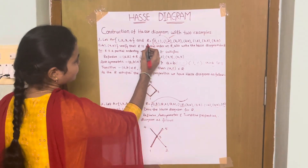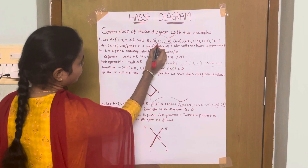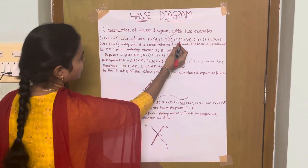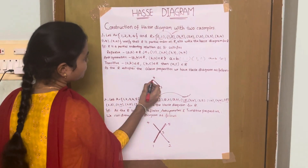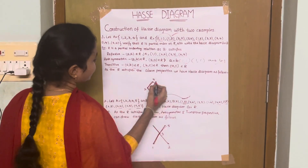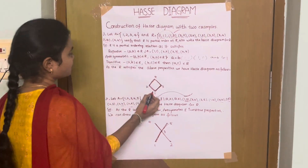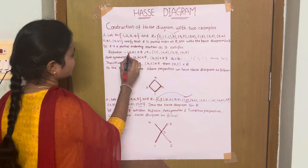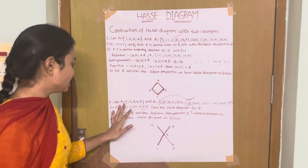Consider the Hasse Diagram from relation R. We have (1,1), (1,2) — so from 1 to 2. Then (2,2), (2,4) — so from 2 to 4. Also (1,3), so from 1 to 3. Then (3,3), (3,4) — from 3 to 4. And (1,4) is derived from the path 1 to 2 or 1 to 3 and 3 to 4. Finally (4,4) as it is. This is the construction of the Hasse Diagram.